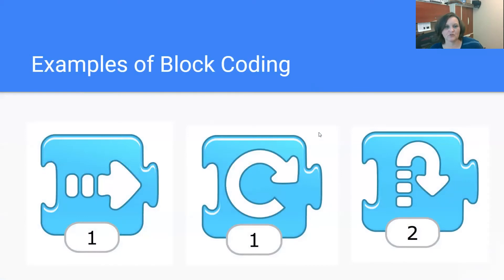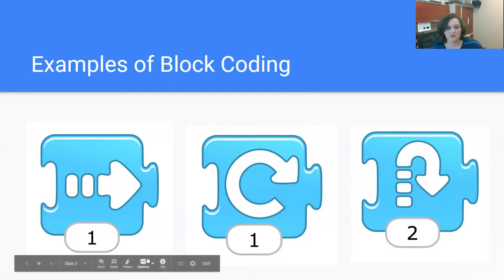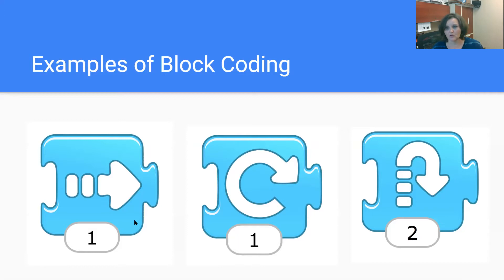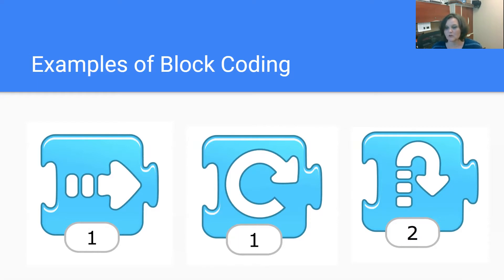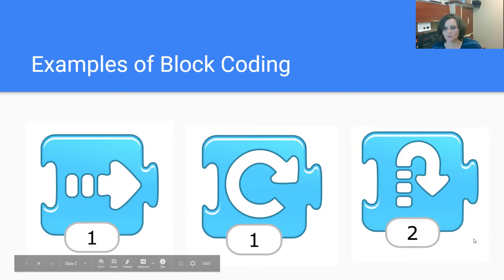We're going to review just a few of the block coding that we went over last time. If you were using a program such as Scratch Junior, these are some of the codes you might see. This arrow points to the right and the one underneath would tell the object to move one space to the right. The second one would mean the object would turn around one unit or space. This last one would be a jumping move and the object would jump two times.